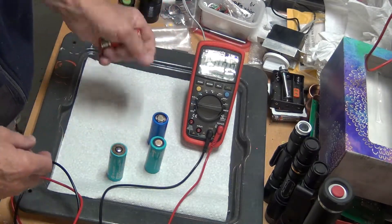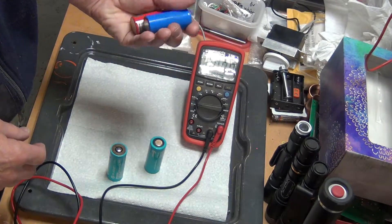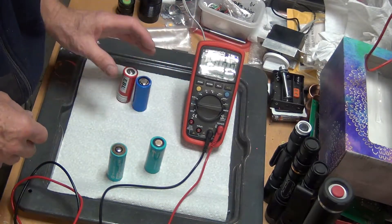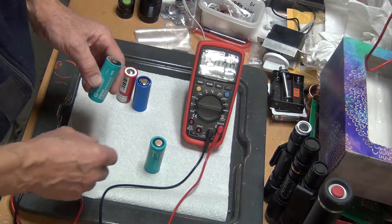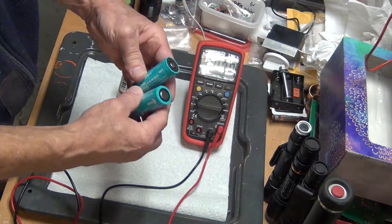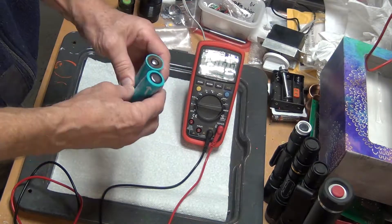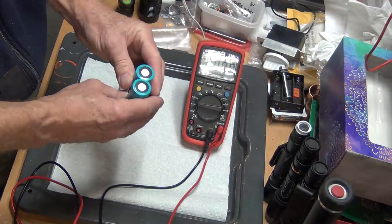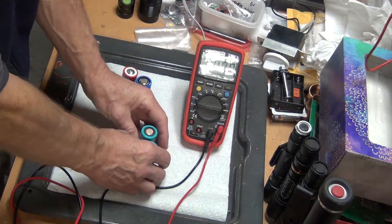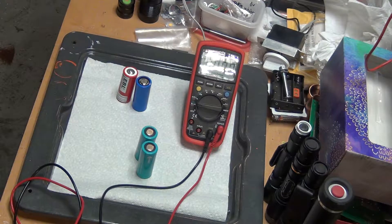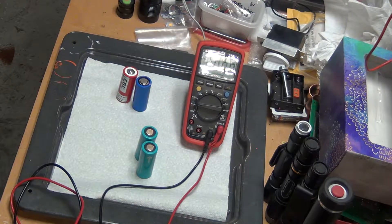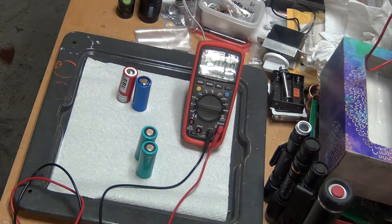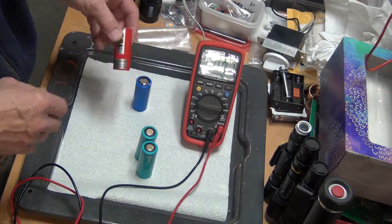EBL would be the winner, then PKcell right behind it, and then as we can see here the Olight batteries, both of them are losers. And that's actually very interesting. I'm surprised, I would expect a little better from the Olight, but anyway, just you know.